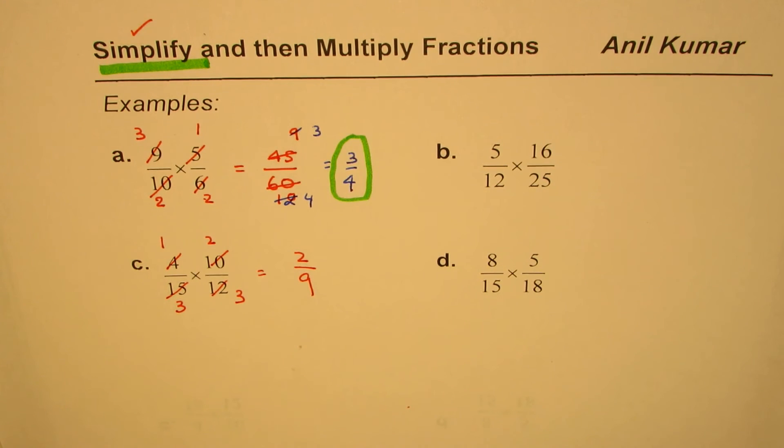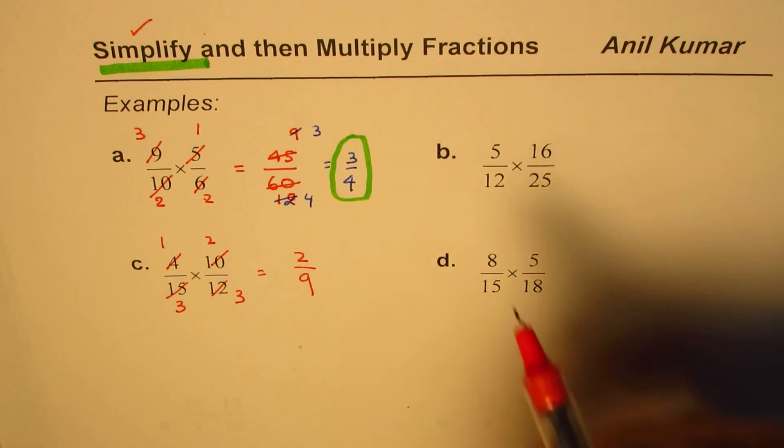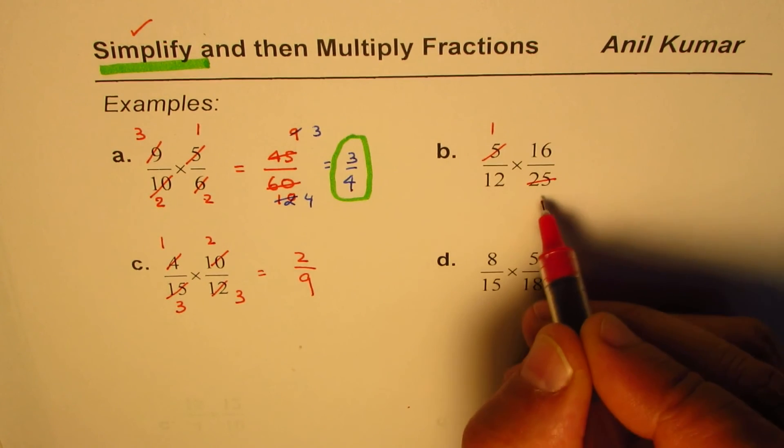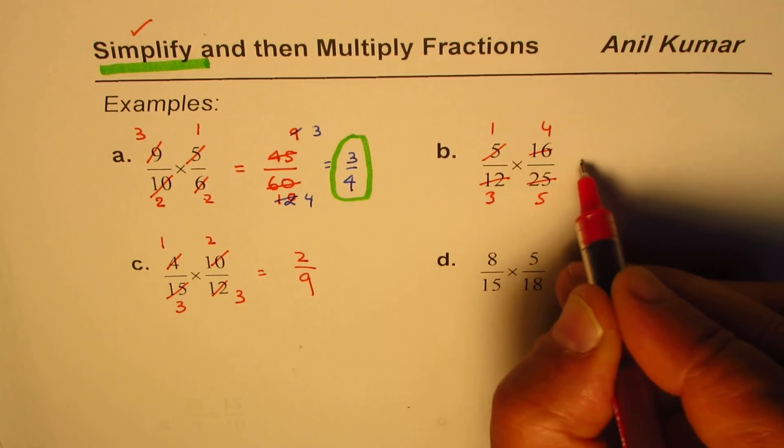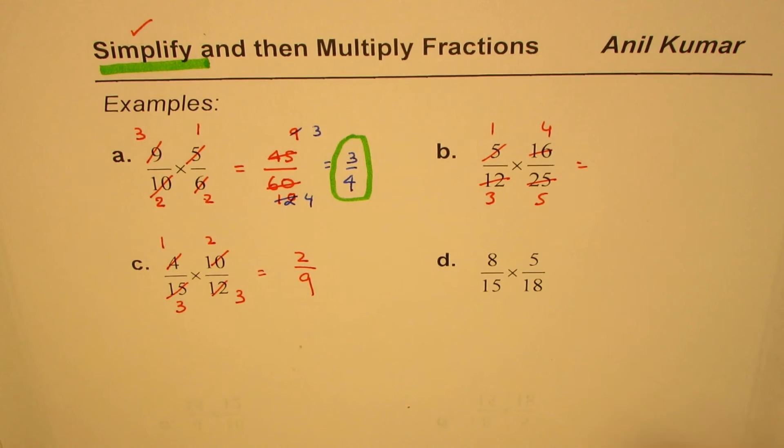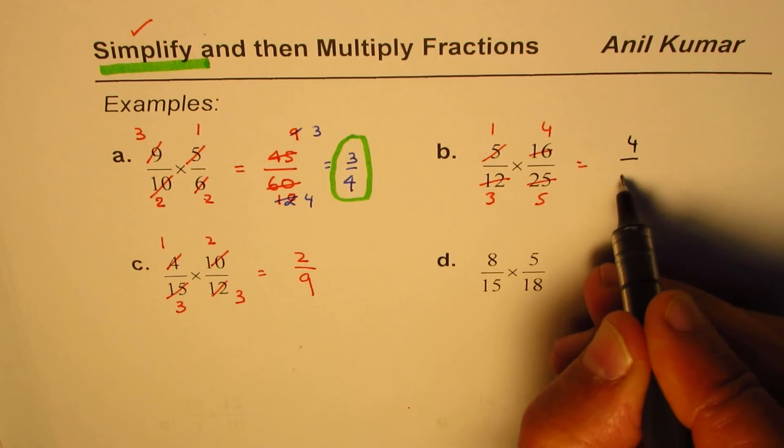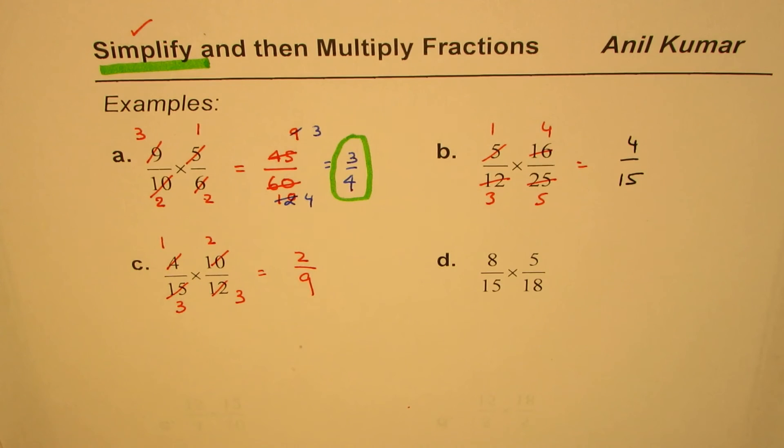Try to simplify and then divide. You can pause the video, answer the other two questions, and then look into my solution. Let's continue. For 5 over 12 times 16 over 25: 5 goes 1 time into 5, this is 4 times 3 and 4 times 1. The answer is 4 over 15.